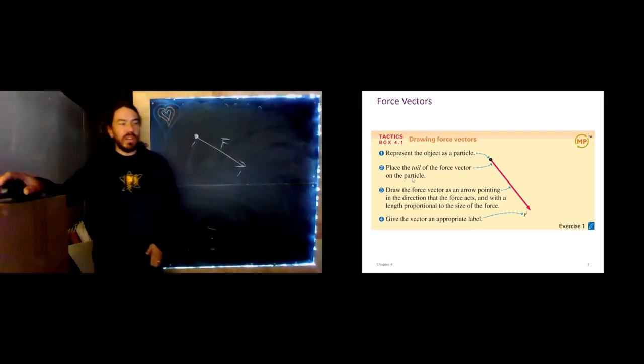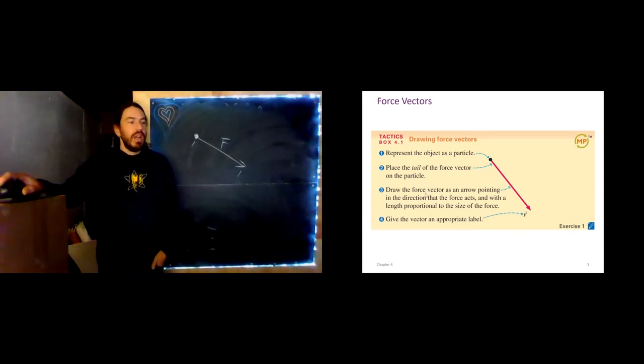That location is right here. And so this length is proportional to the magnitude of the force. It's not indicating some spatial extent to the force. The force is happening right here. And this length should be proportional to the magnitude, or how many newtons it is. So we place the tail of the force vector on the particle. The force vector should be an arrow. It's in the direction that the force acts. And the length is proportional to the magnitude, or the size of the force. And we give it a label. In this case, we have cleverly named our force F.